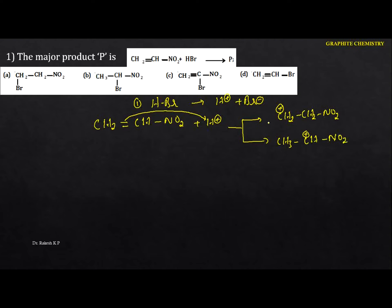One is a primary carbocation and the other is secondary. However, for any carbocation, if there is an electron-withdrawing group nearby, the stability decreases. The secondary carbocation here is far from the electron-withdrawing group compared to the first one, making it the most stable.